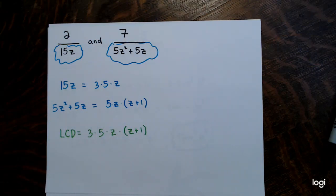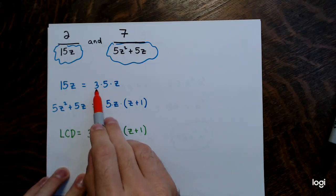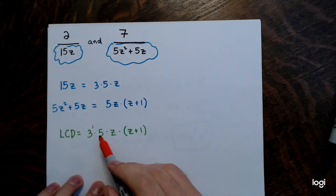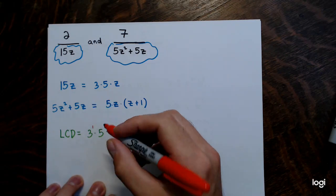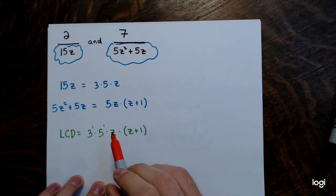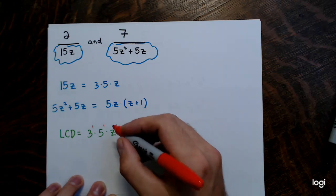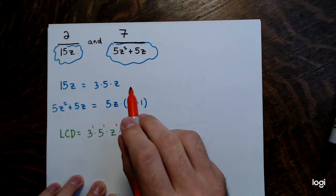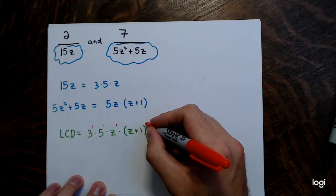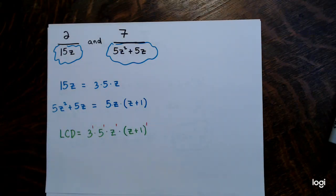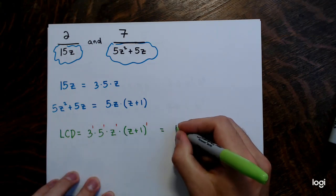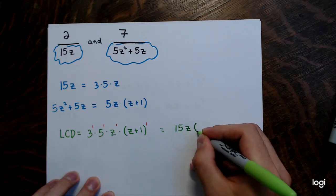For the powers: 3 appears once in the first factorization and zero times in the second, so power of 1. 5 appears once in each, so power of 1. z appears once in each, so power of 1. The quantity (z plus 1) appears zero times in the first and once in the second, so power of 1. Every factor has a power of 1 in the LCD, so the LCD is 3 times 5 times z times (z plus 1), which equals 15z(z plus 1).